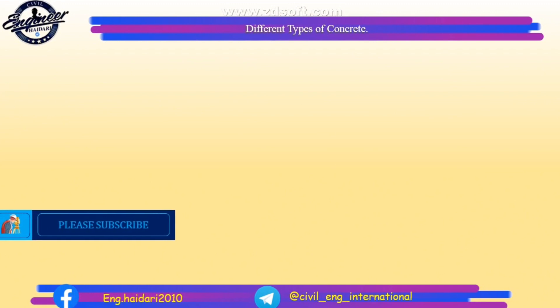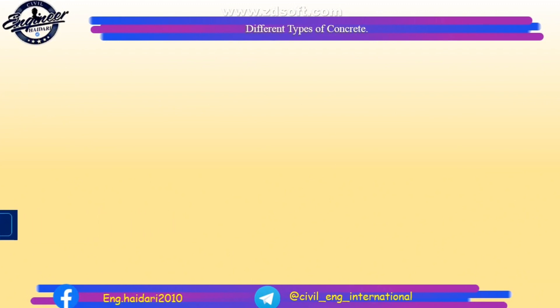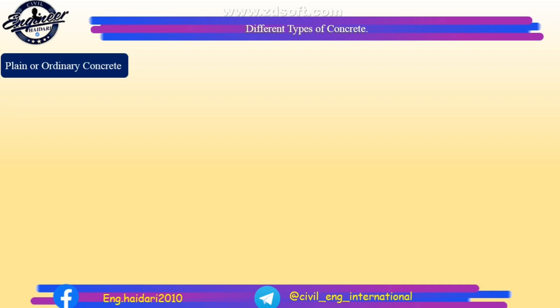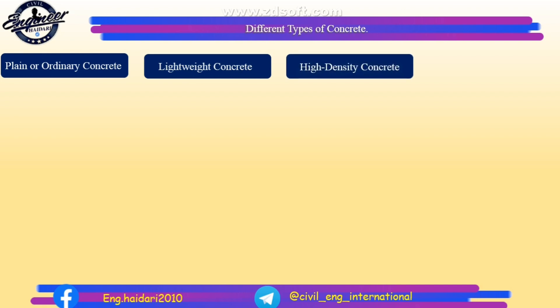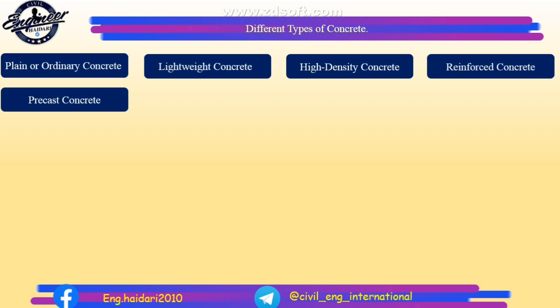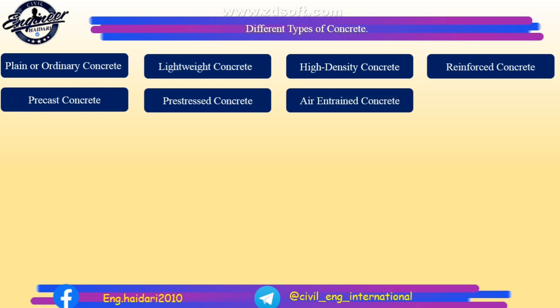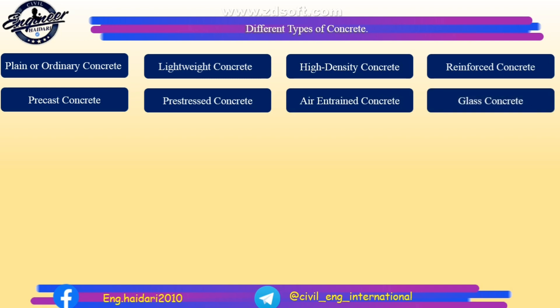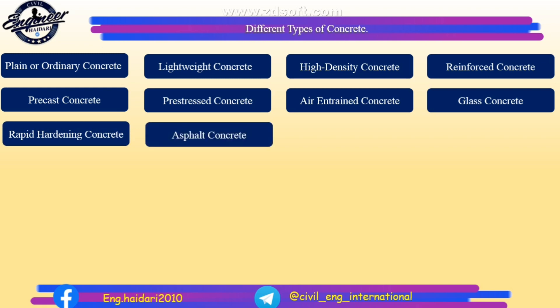In general, different types of concrete are covered in this channel, which are: 1. Plain or ordinary concrete. 2. Lightweight concrete. 3. High-density concrete. 4. Reinforced concrete. 5. Pre-cast concrete. 6. Pre-stressed concrete. 7. Air-entrained concrete. 8. Glass concrete. 9. Rapid hardening concrete. 10. Asphalt concrete.